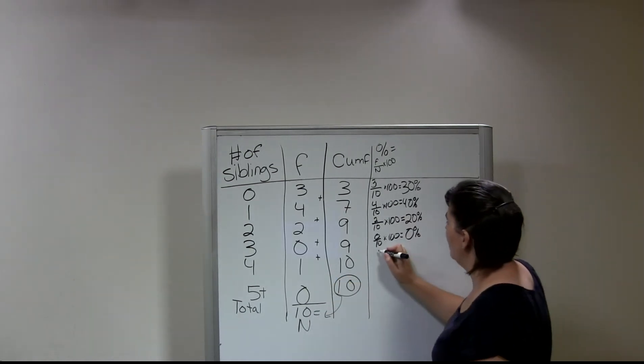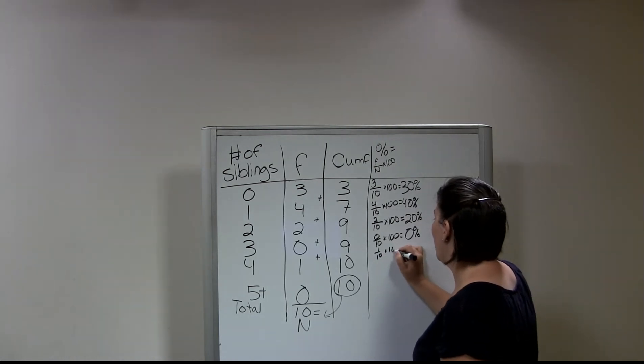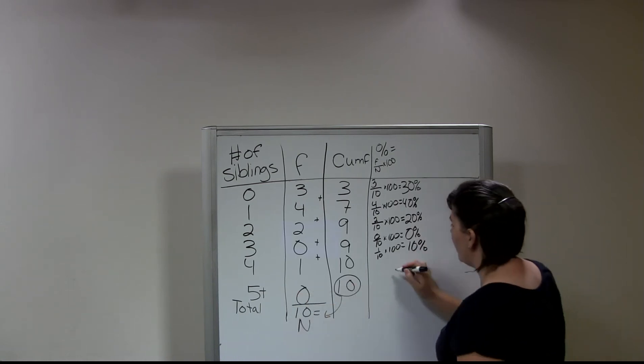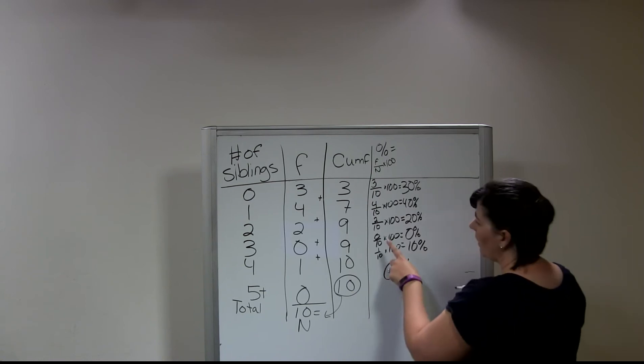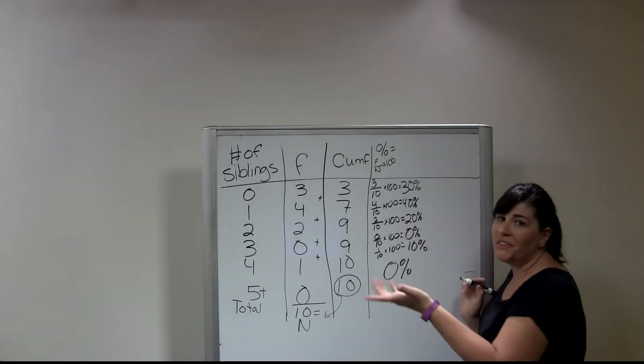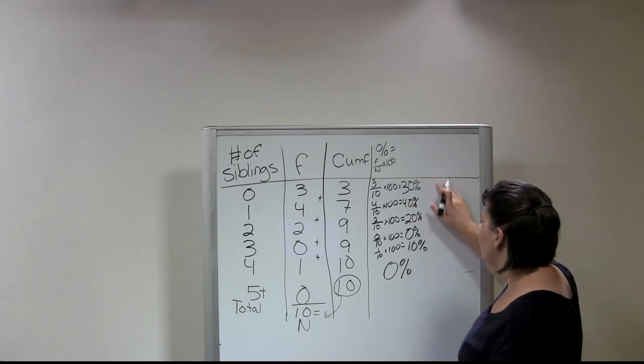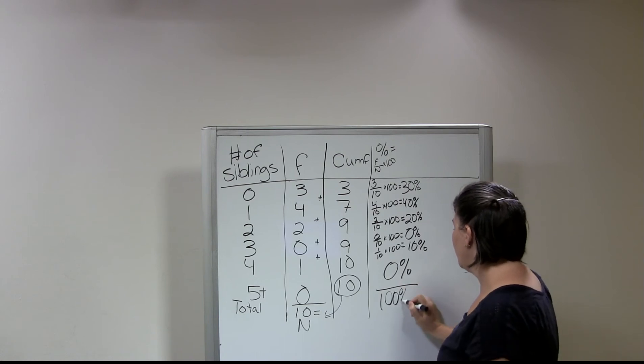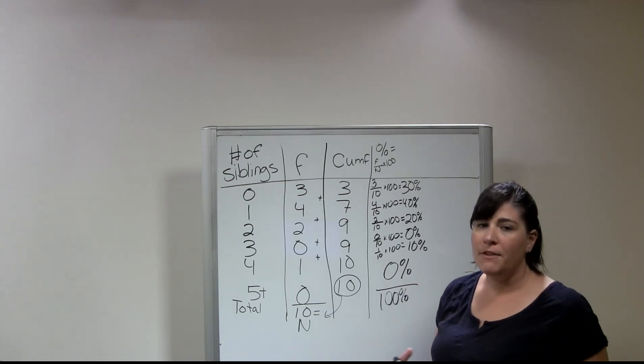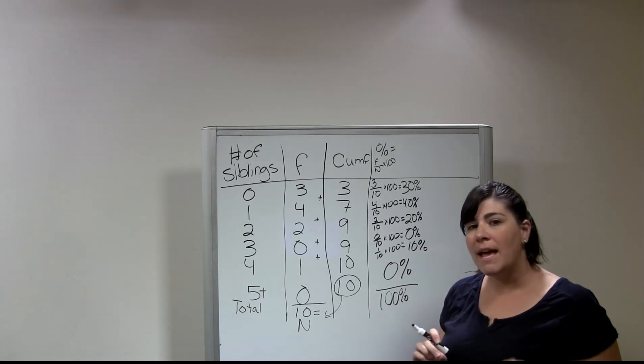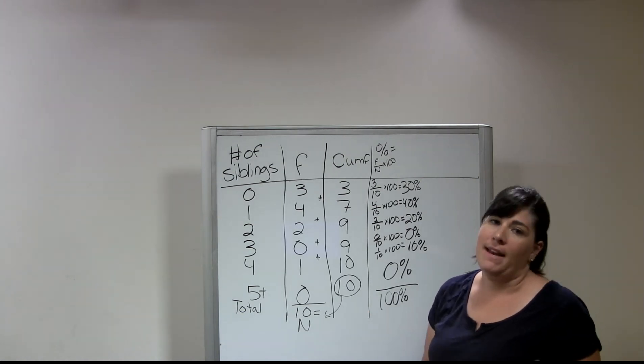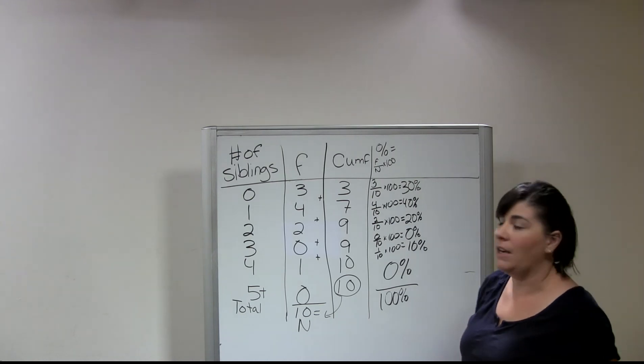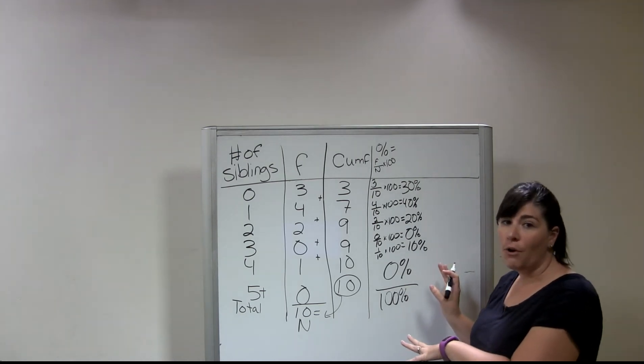And then we have 1 over 10 times 100. And that's going to be 10 percent. And then our last one, we have another 0 percent. So we're not going to have to write that out again because we've already shown our work. So if you've already done it once, you can kind of skip it. So when I add all of this up, and if I were to total this, this should equal 100 percent. Now, if you're rounding, if you don't have a nice even number like we do here, it may not quite equal 100. It might equal 99.99 percent or 100.01, but it should be really close if you've done it correctly.